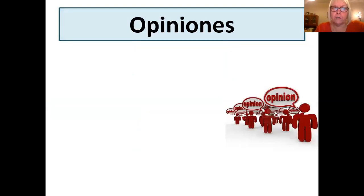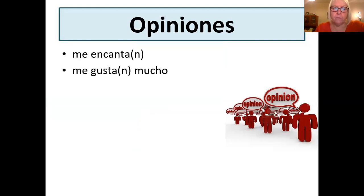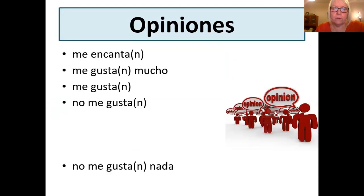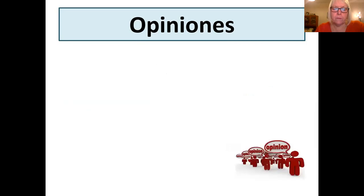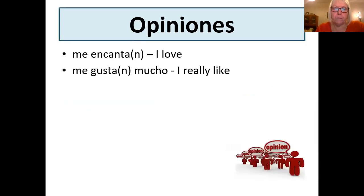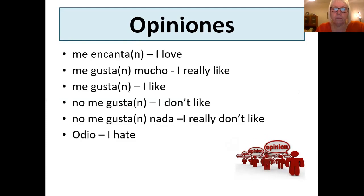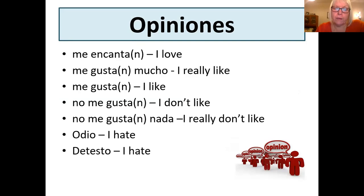Opinions — and these are really familiar to you in Year 10. You'll have done all these lots of times in years seven, eight and nine. You have these basic ones here — can you just copy these down and remind yourself of the meanings? The grammar point is: if you like, love, or hate more than one thing, you have the 'n' at the end. So me encantan is for more than one thing, me gustan is I like more than one thing. Odiar and detestar are different — they don't use the pronoun in front; they are just verbs in their own right.